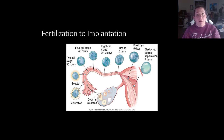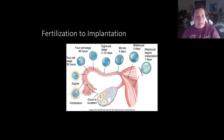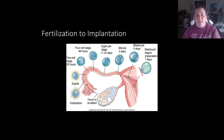When the blastocyst implants, it's also going to start releasing the hormone that is detected in the pregnancy test. This is what we see from when fertilization takes place to implantation, which takes about seven days.